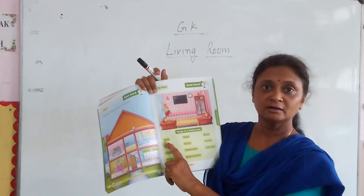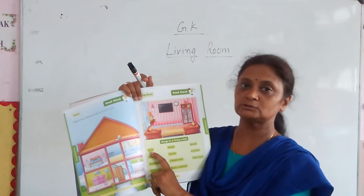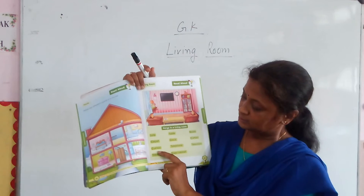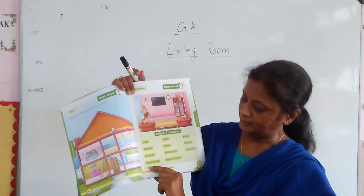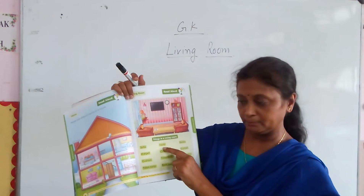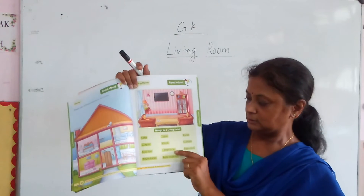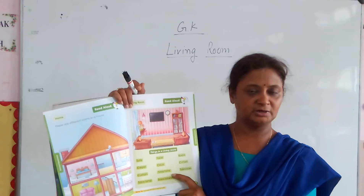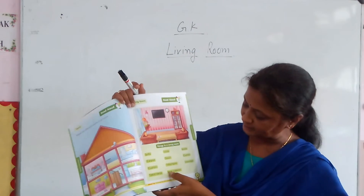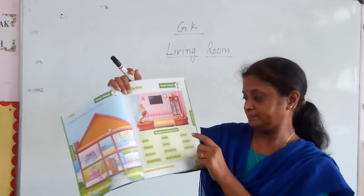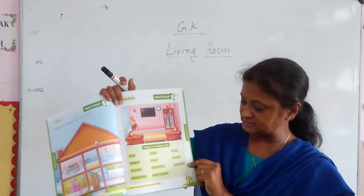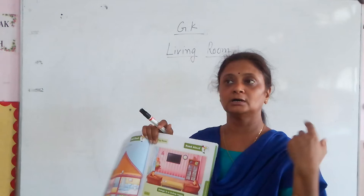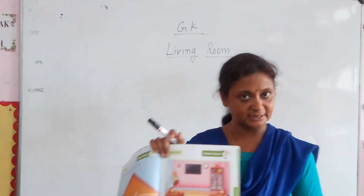In the living room, first of all, the sofa, which you sit on; carpet, it's optional; cushions; table lamp; clock; telephone; book cabinet; books; curtains; television; show pieces; masterpieces; some frames; some decorative items.